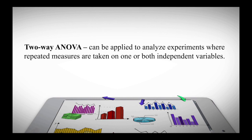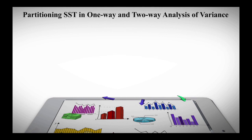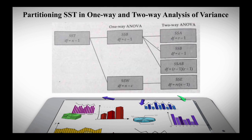By definition, two-way ANOVA can be applied to analyze experiments where repeated measures are taken on one or both independent variables, meaning there are repeated items or repeated data inside our table. To distinguish between one-way and two-way analysis of variance, we look at the partitioning of the SST or sum of squares total. For two-way ANOVA, SST is divided into SSA, SSB, and SSAB, where A is factor A, B is factor B, and SSAB is the factor AB interaction.